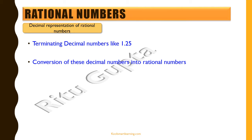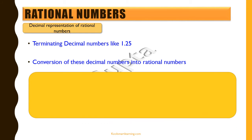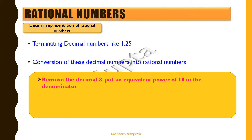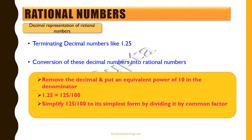Let's see why terminating decimal numbers are rational by converting them into p by q form. We remove the decimal and put an equivalent power of 10 in the denominator. For example, 1.25 becomes 125 by 100, because there are two decimal places. We then simplify by dividing by the common factor 25, giving us 5 by 4. Since 5 by 4 is clearly in p by q form, 1.25 is a rational number. Any terminating decimal can be represented as a rational number.